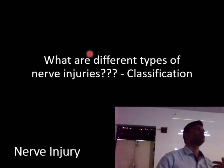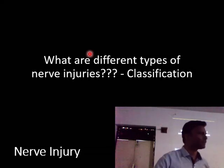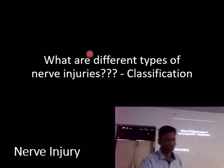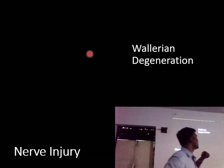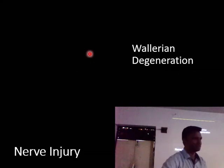Before we talk about the different classifications of nerve injuries, we need to talk about something called Wallerian degeneration.